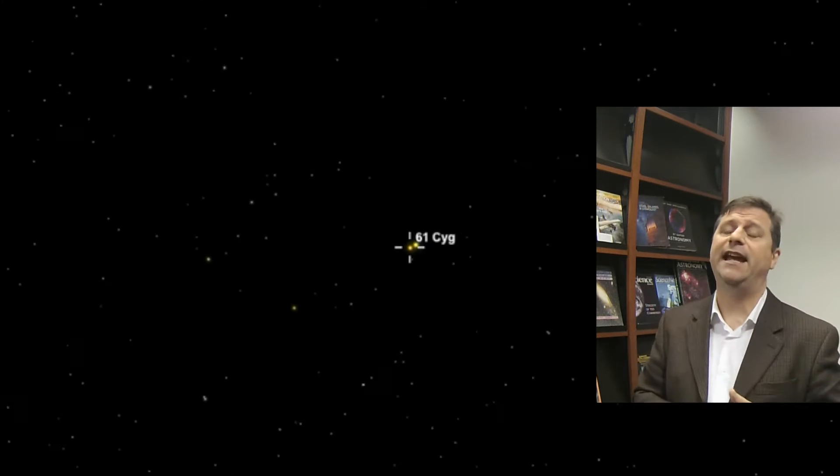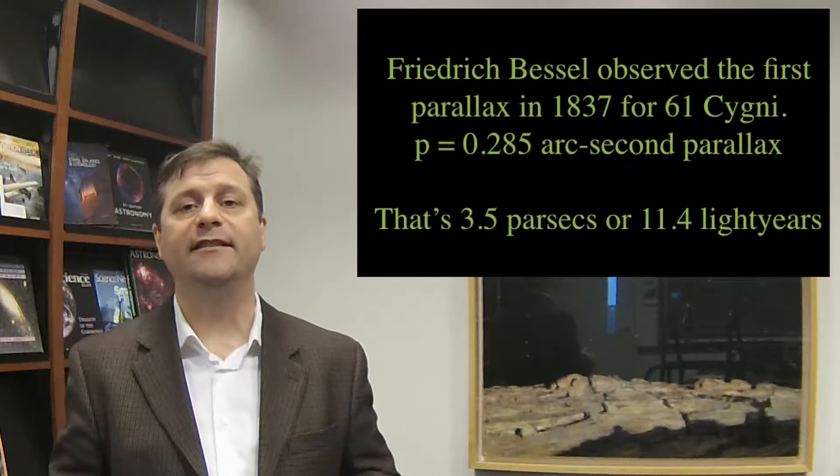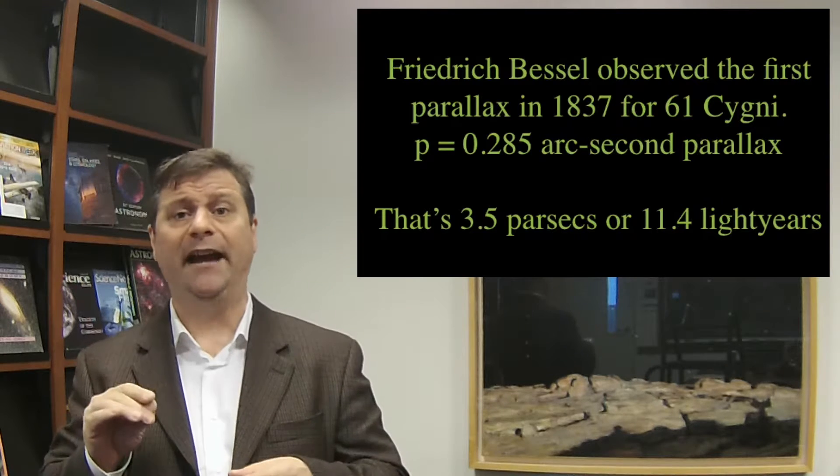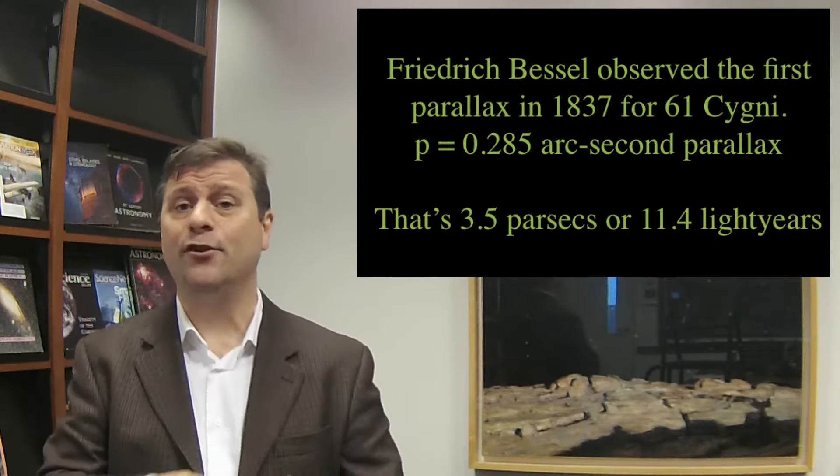And so in 1838 Friedrich Wilhelm Bessel measured it, measured its parallax to be 0.285 arc seconds, which works out to be about three and a half parsecs or about 11.4 light years. So the very first parallax that was discovered was less than an arc second, a quarter of an arc second. It's an incredibly difficult measurement and it took until 1838 for someone to develop it.